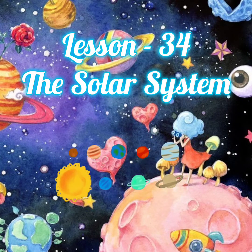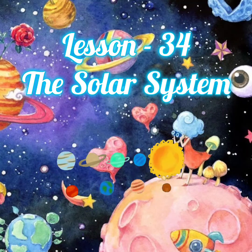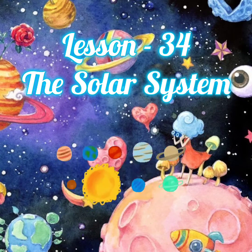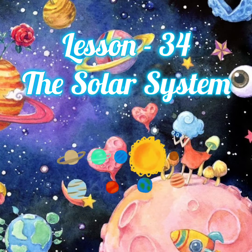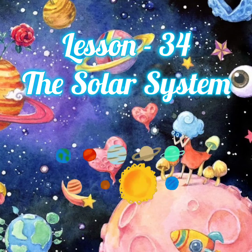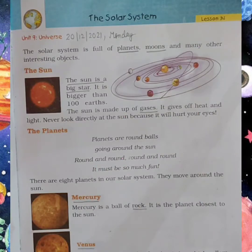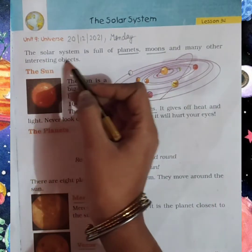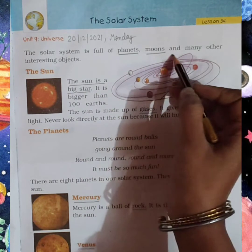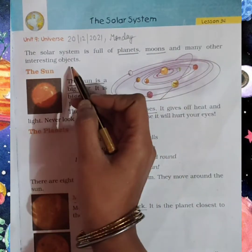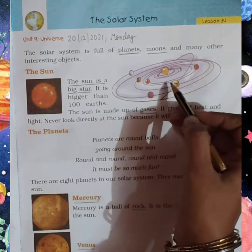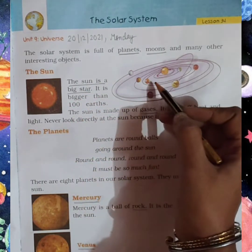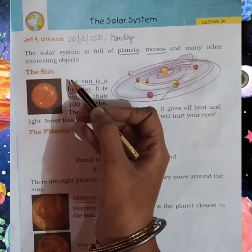Today we are going to study lesson number 34: The Solar System. The solar system is full of planets, moons, and many other interesting objects. Solar system kis se bana hua hai? Solar system planets se, moons se, aur other interesting objects se milkar bana hua hai.